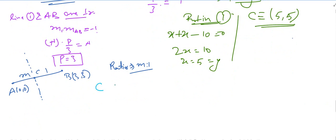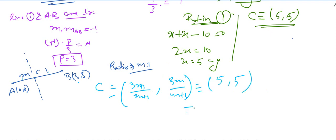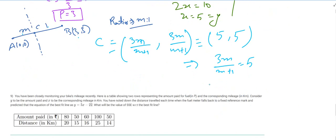Applying the section formula, C's x-coordinate is 3m over (m+1). Since C is (5,5), we get 3m over (m+1) equals 5. So 3m equals 5m plus 5, which gives minus 2m equals 5, so m equals minus 5 over 2.